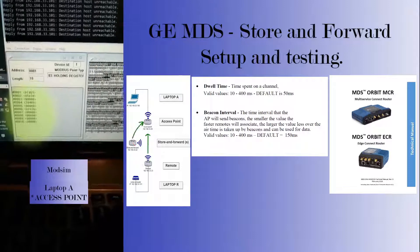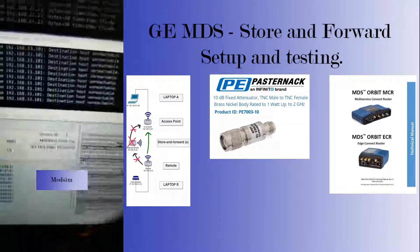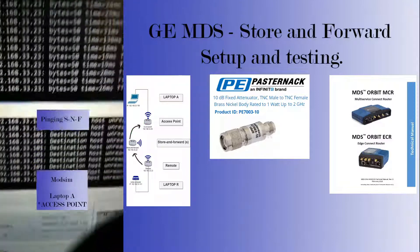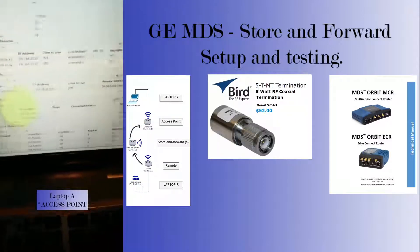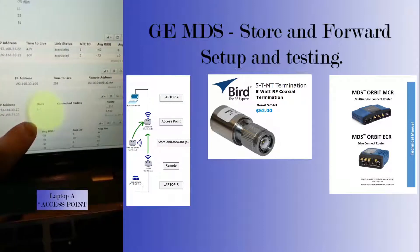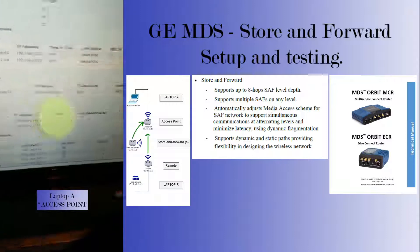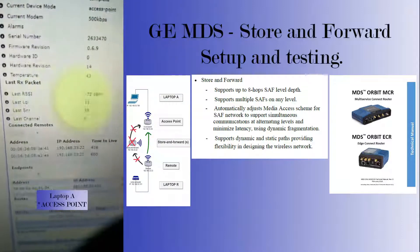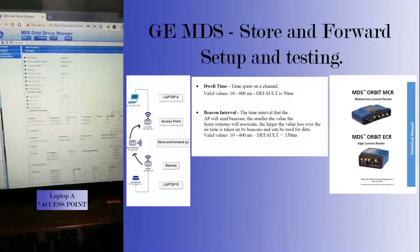We still have traffic. Modbus is still polling. We can see that our ping to our store-and-forward is no longer working, but our ping to our remote still is. If we look at the GUI, we can see our routes, and we have only one hop — indicating that these units are talking directly to the AP, not going through anything. We can see our RSSI to the last RSSI to the unit. It works.